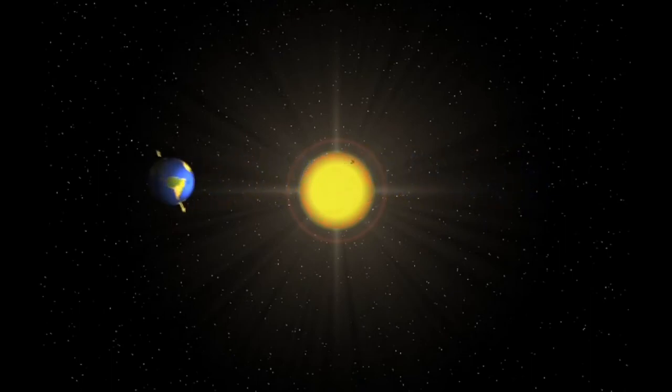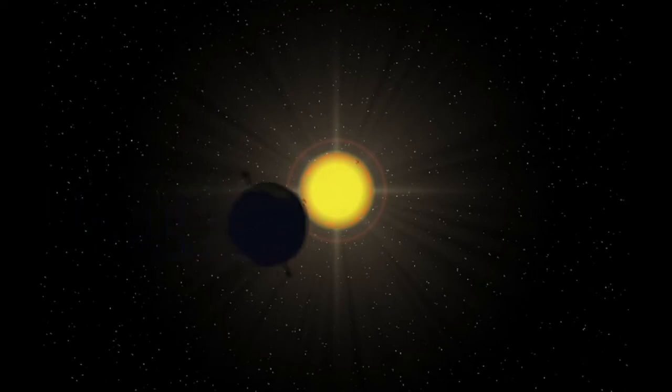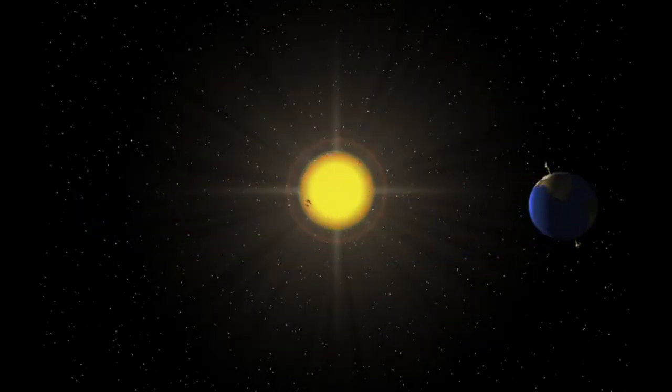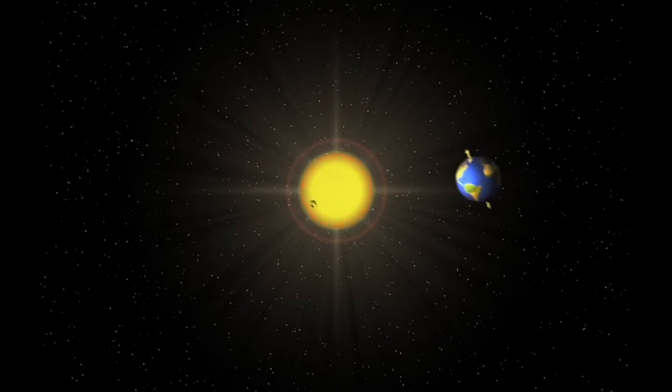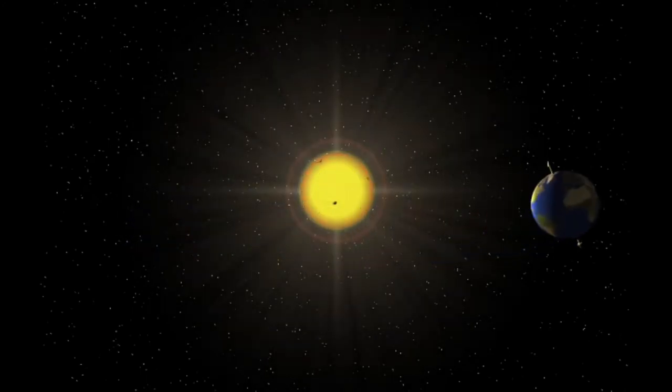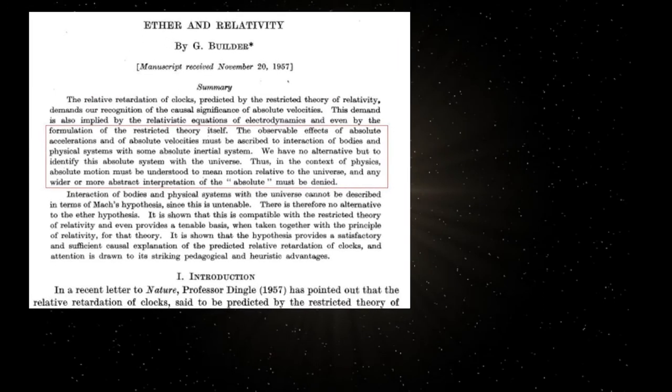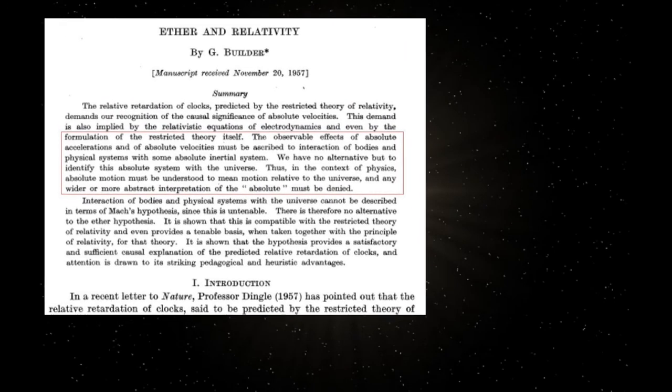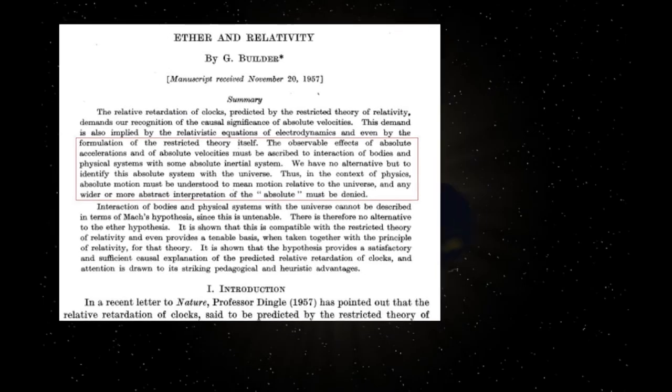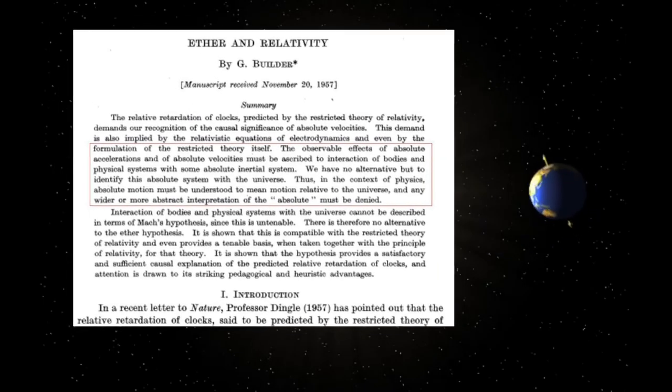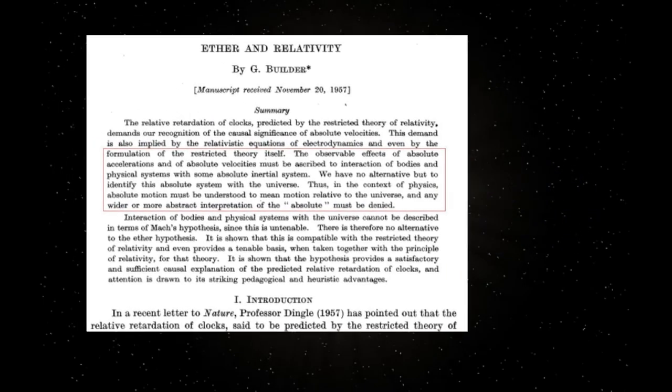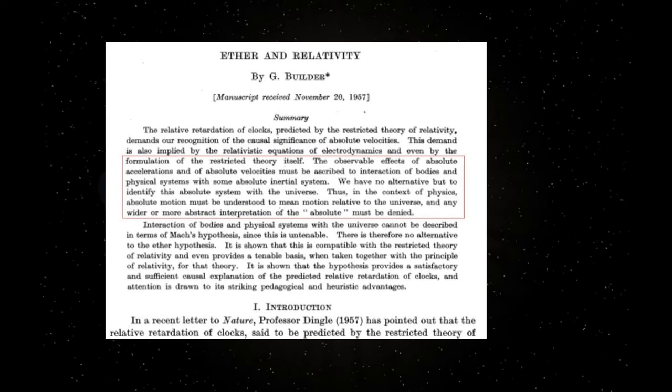All rotational motion is somehow referenced to this universal rest frame, as the speed of light would also appear to be. We note that some relativists have come to recognize this, in particular the Australian relativist Geoffrey Bilber, who summed it up this way: The observable effects of absolute accelerations and of absolute velocities must be ascribed to interaction of bodies and physical systems with some absolute inertial system. We have no alternative but to identify this absolute system with the Universe.